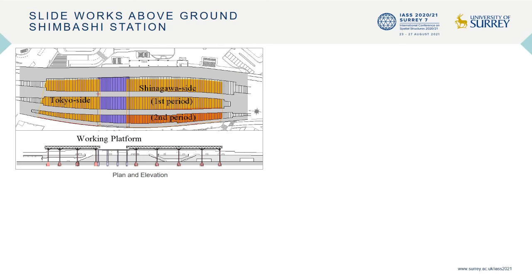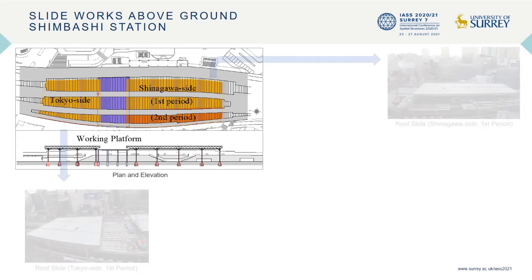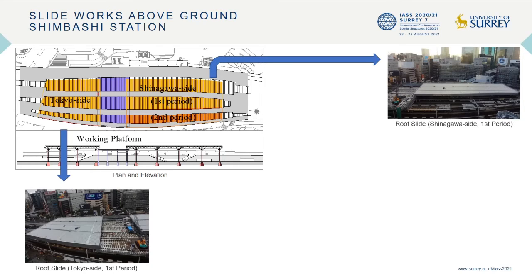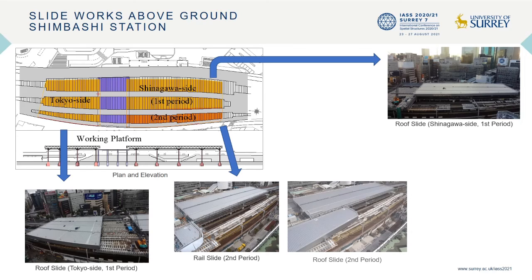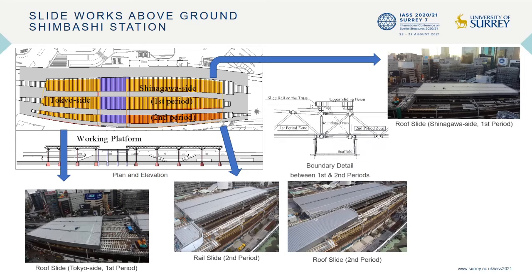This sheet illustrates the roof slide operations in the first and second periods. Since the ball joint space frame is adapted, the added roof can be connected together with the pre-constructed adjacent roofs.